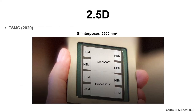In 2020, TSMC announced their latest 2.5D solution with a huge silicon interposer. It has two processor dies at the center and eight HBM modules around them. It uses a 2,500 square millimeter silicon interposer, and TSMC planned to start mass production from 2023.